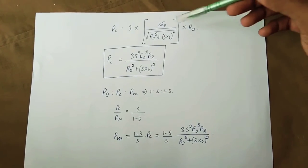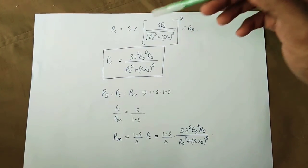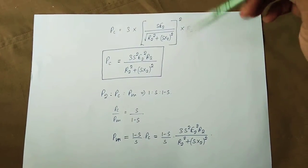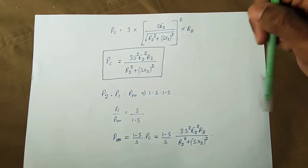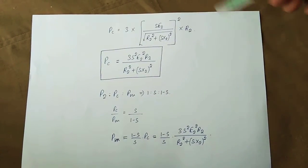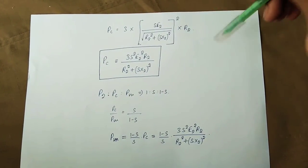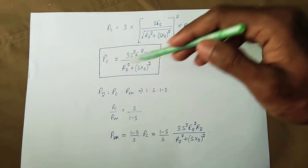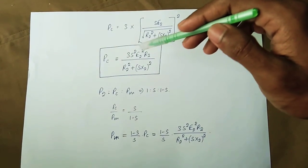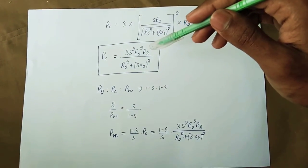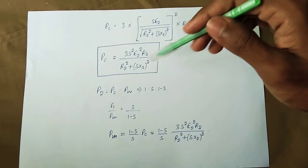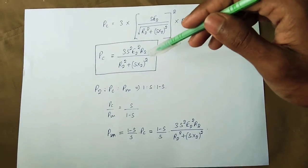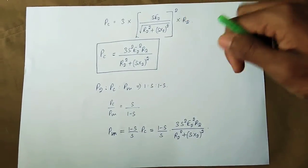Substituting I₂ into the power expression, we get P = 3 × s² × E₂² × R₂ divided by (R₂² + (sX)²).